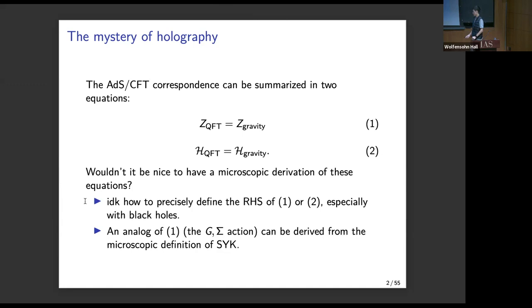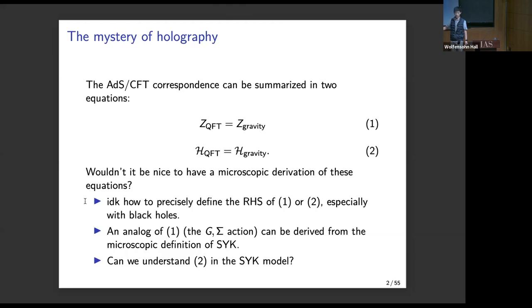The reason why this is a retreat from the problem is because the first equation is already derived. That's the famous G-sigma action, and it's analogous to the Einstein action, only in the sense that 1/N appears in the same way that G_Newton appears. That motivates the question of whether we can understand the second equation in SYK, which is, in large part, the topic of this talk.